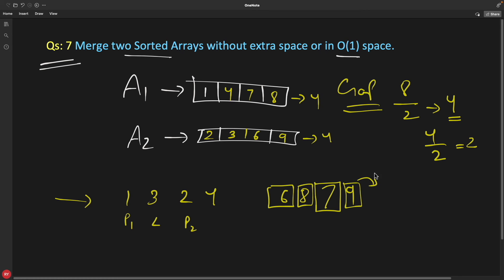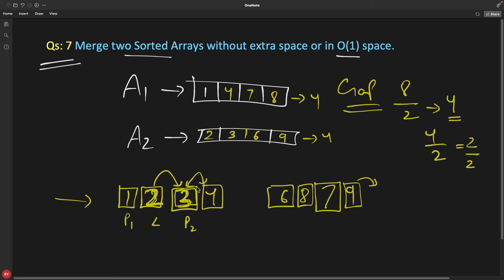Divide the gap of 2 by 2 — now the gap is 1. Compare adjacent elements: 1 less than 3 (fine), 3 less than 2 (no — swap), then 3 less than 4 (fine), 4 less than 6 (fine), 6 less than 8 (fine). Now compare 8 with 7: P1 is greater than P2, so swap — 8 goes here and 7 goes there. Then 8 less than 9: fine.